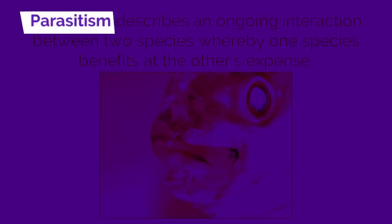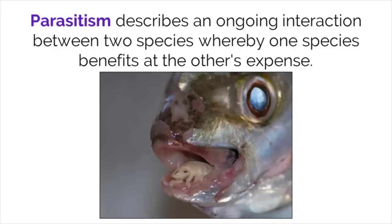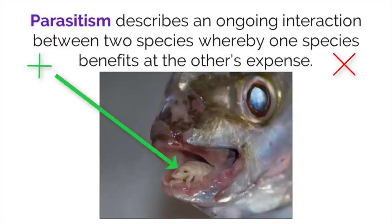Parasitism describes an ongoing interaction between two species whereby one species benefits at the other's expense. The image on this slide is showing a tongue-eating louse inside the mouth of a fish. This parasite eats the fish's tongue and then acts as its replacement, stealing food that the fish is trying to eat for itself. In this scenario, the louse benefits and the fish is harmed.